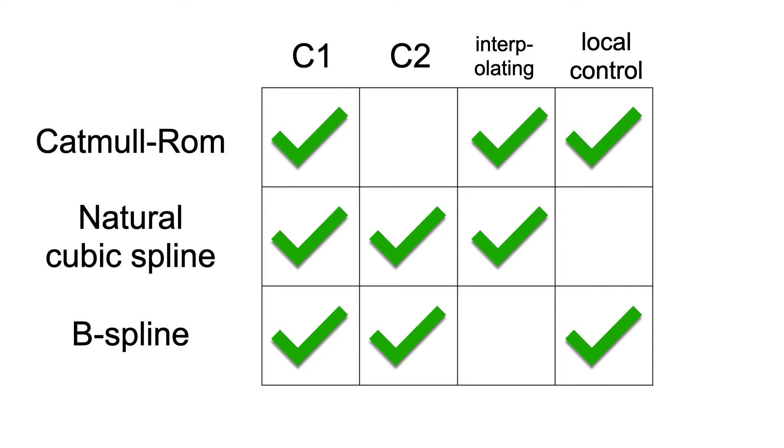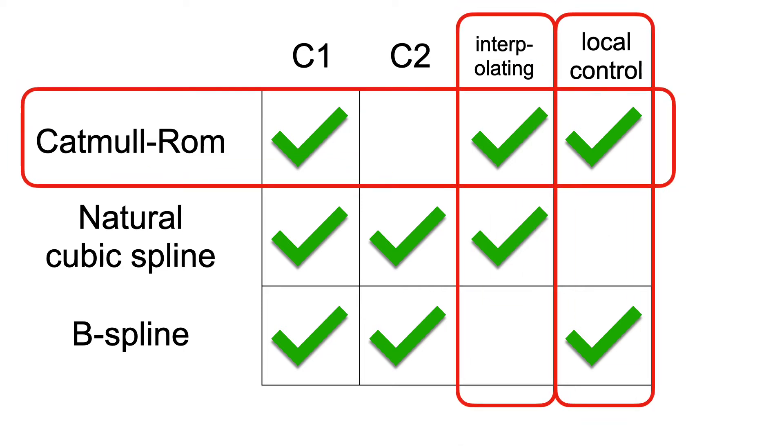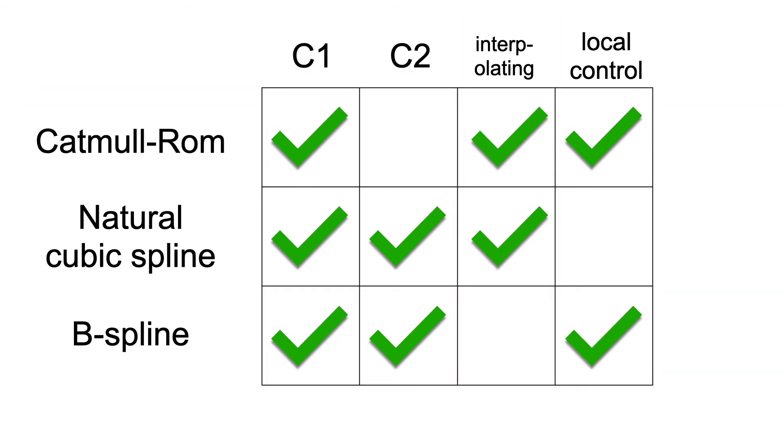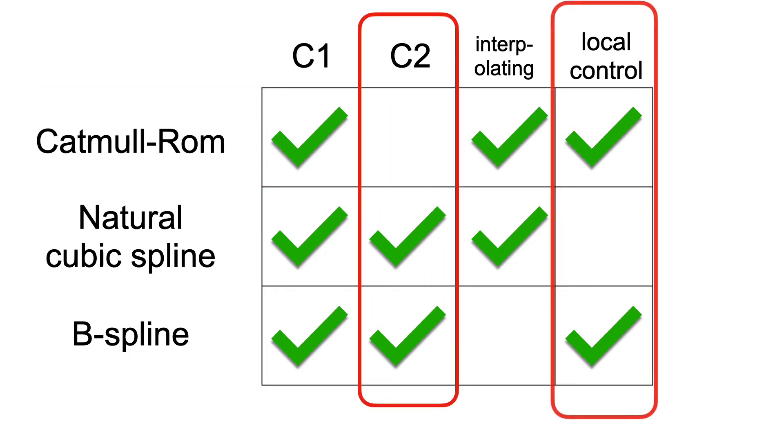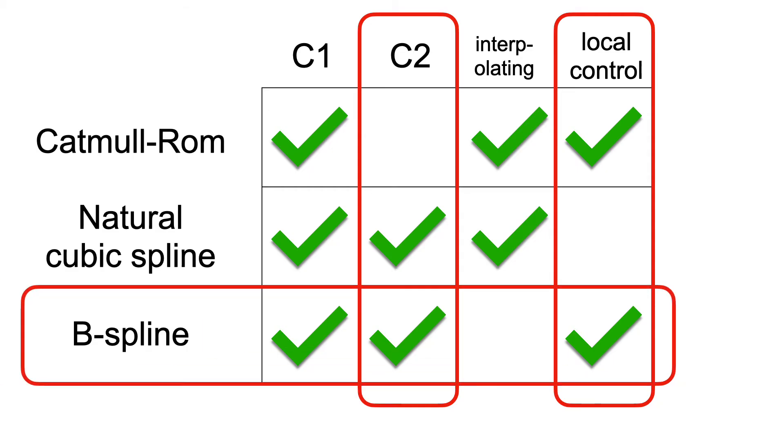For example, if you need to interpolate the control points with local control, Catmull ROM is the way to go. On the other hand, if you want C2 and local control, then B splines are a good choice.